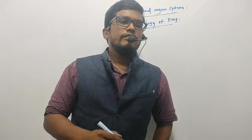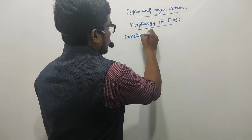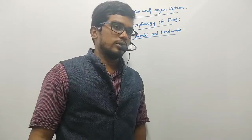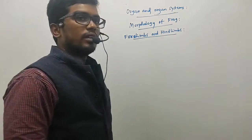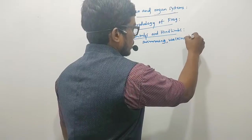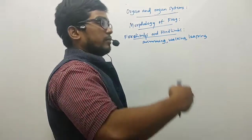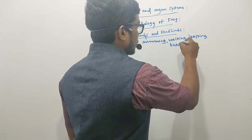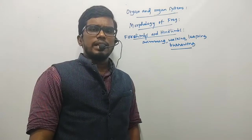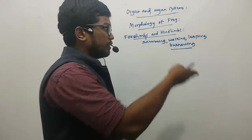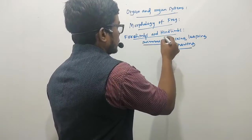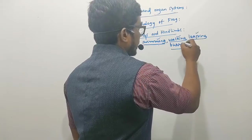Next let us discuss forelimbs and hind limbs. They perform various roles — they help in swimming, walking, leaping from one place to another, and also in burrowing. During hibernation and estivation, frogs survive under burrows, so the limbs are essential for making those burrows.